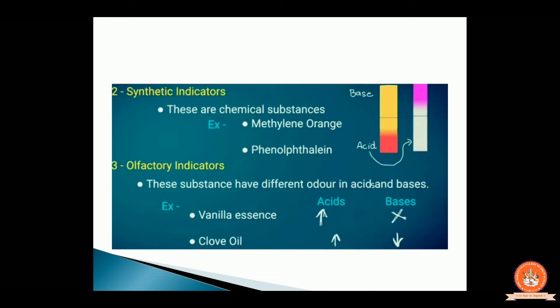The second type is synthetic indicators — these are chemical substances prepared in the chemical laboratory. Examples are methyl orange and phenolphthalein. Methyl orange changes to red in color when acid is present, and stays yellow in its original state when base is present. Phenolphthalein becomes colorless in the presence of acid.